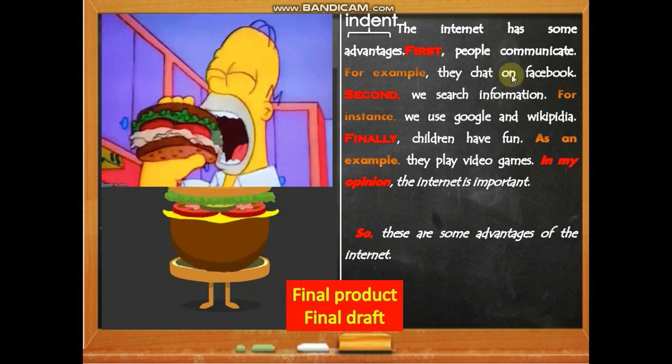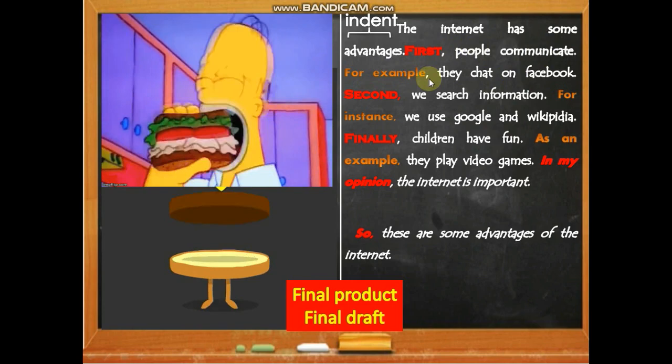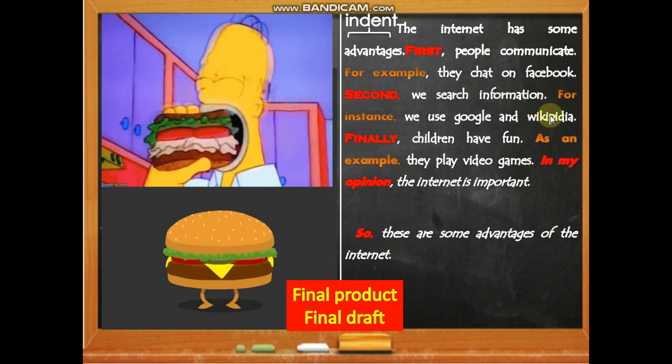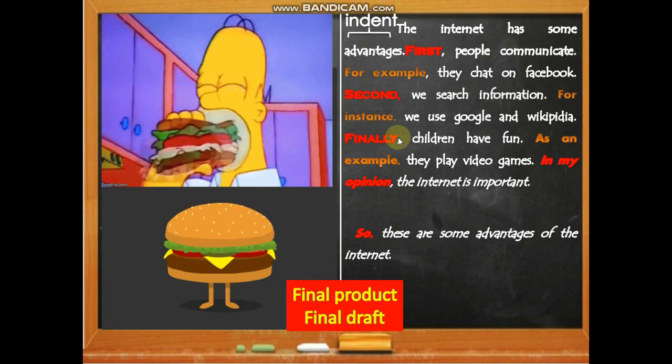Keep the words simple — subject, verb, object is enough. Second: 'We search information.' For instance: 'We use Google and Wikipedia.' Each idea gets its own simple sentence followed by its example. Finally — we always use 'finally' for the last idea.